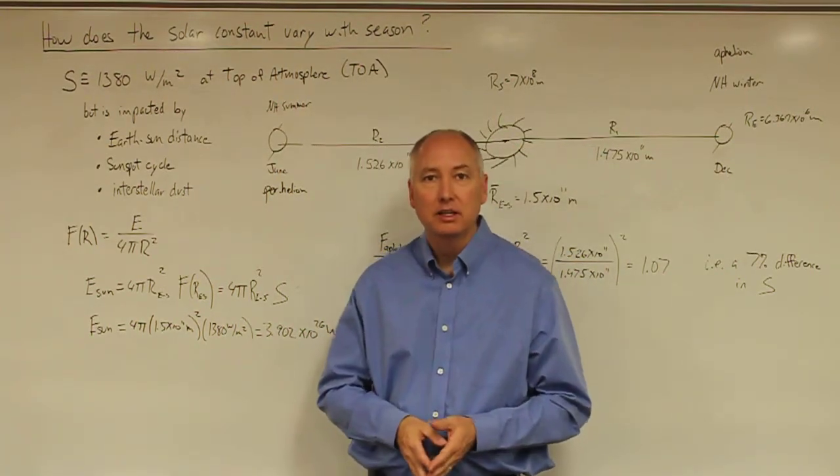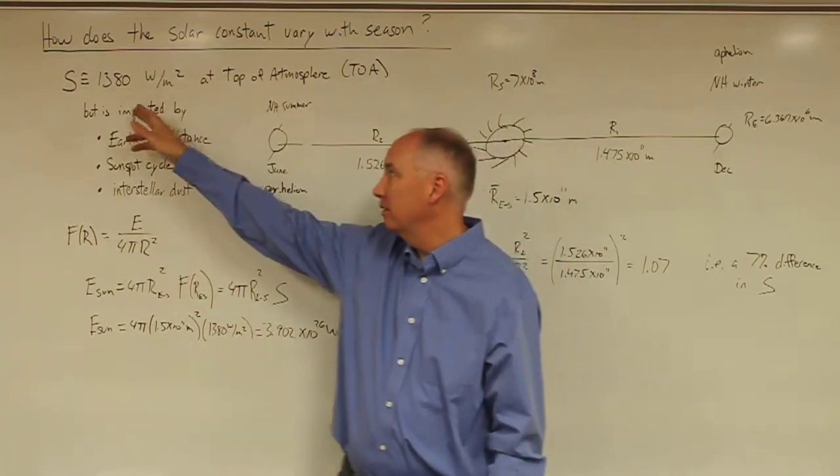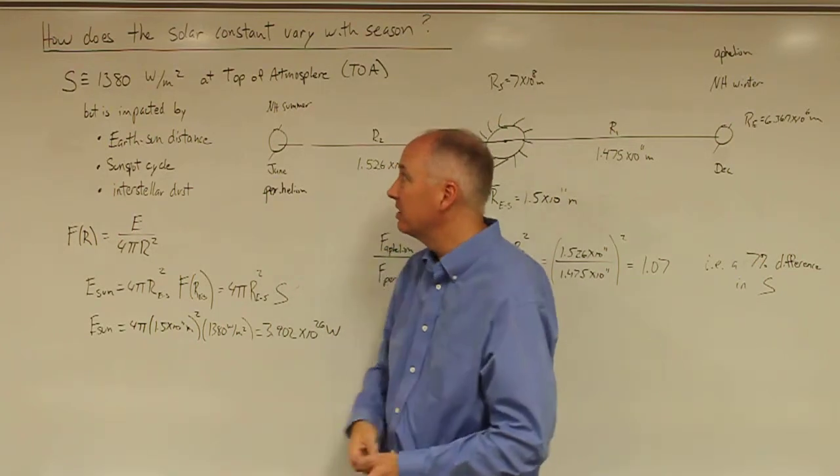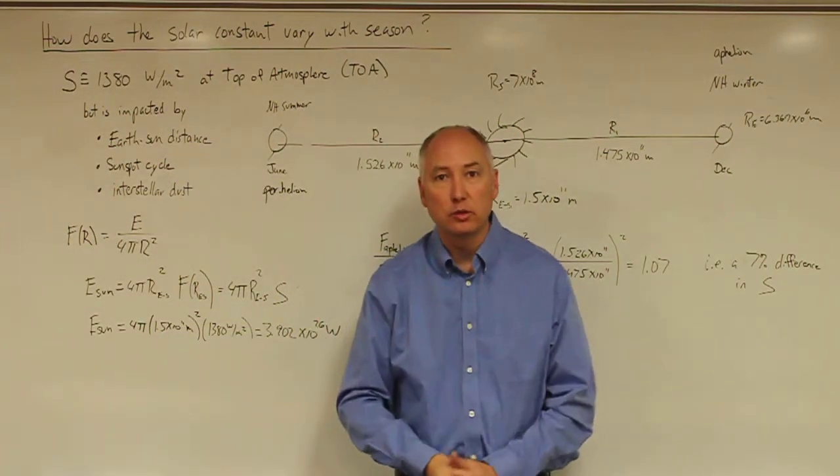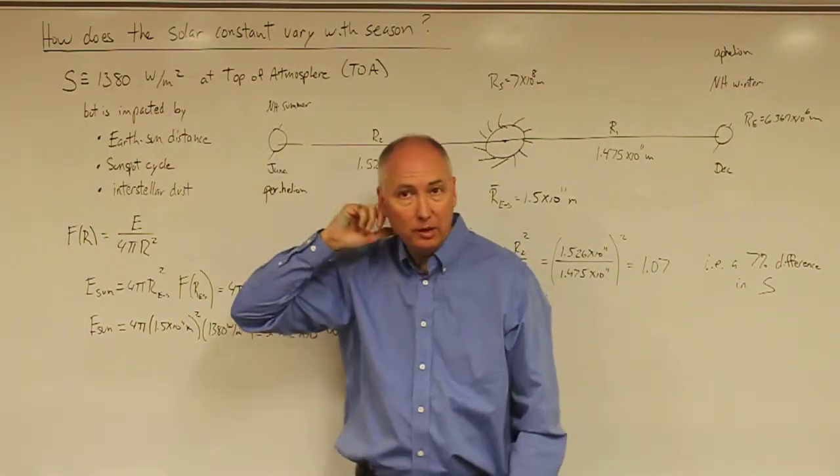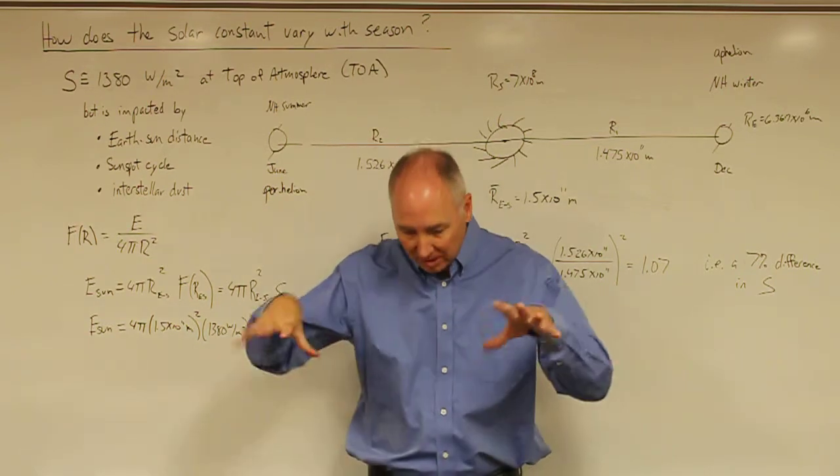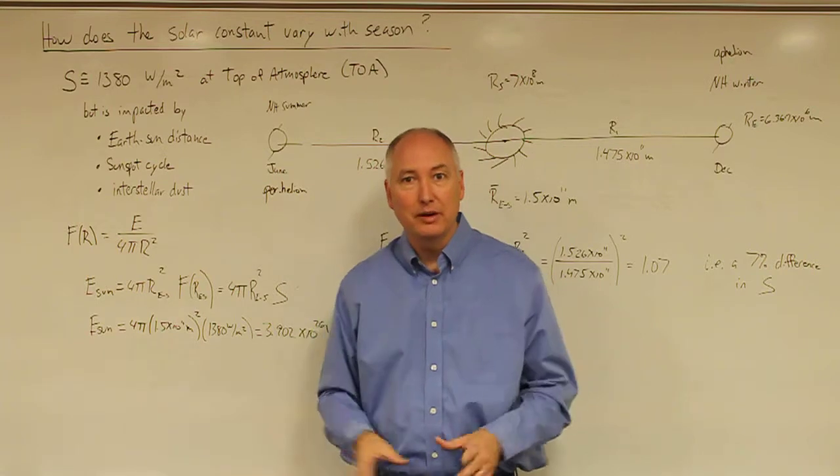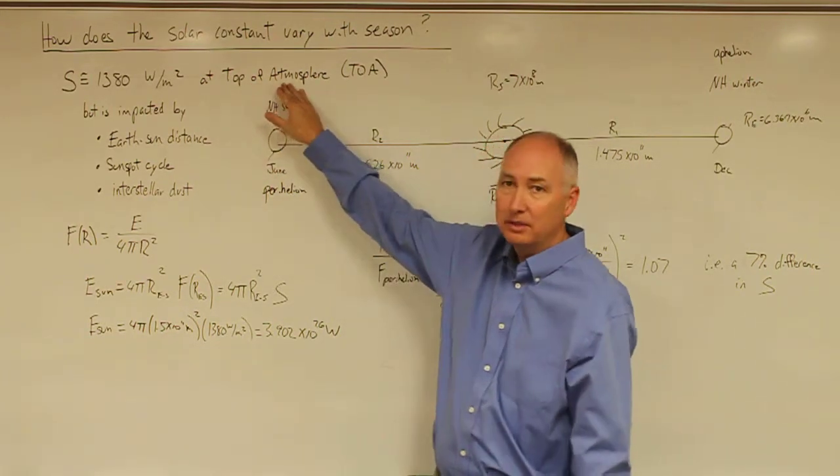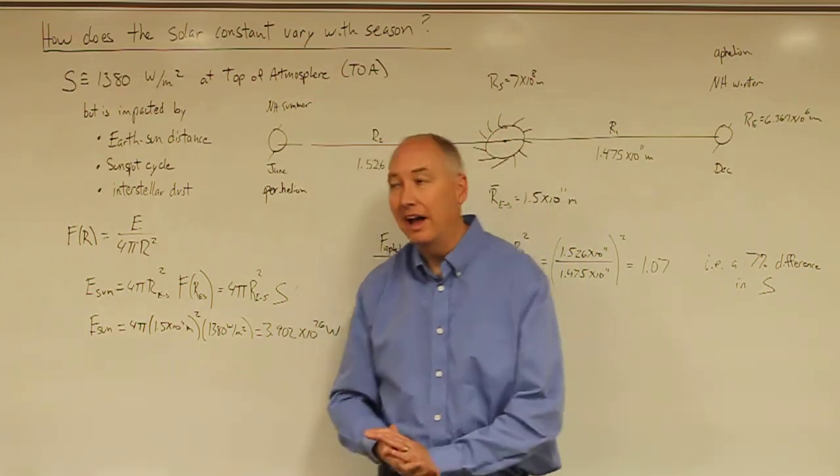Measurements from satellites pointing back towards the sun that are in orbit of our planet have determined that the average solar constant is about 1380 watts per meter squared. If you think about one square meter, 1380 watts per meter squared would be the equivalent of 1400 watt light bulbs illuminating that area. That would be very, very bright. And that's referred to the top of the atmosphere, TOA. We'll use the abbreviation TOA a lot in atmospheric radiation.